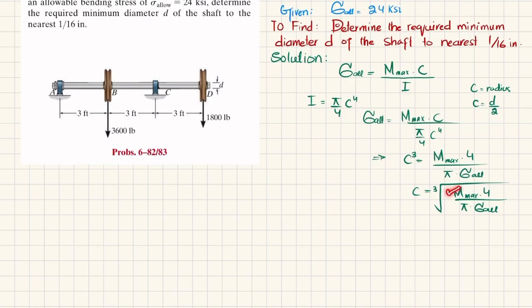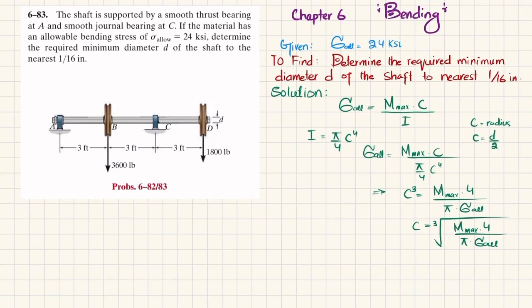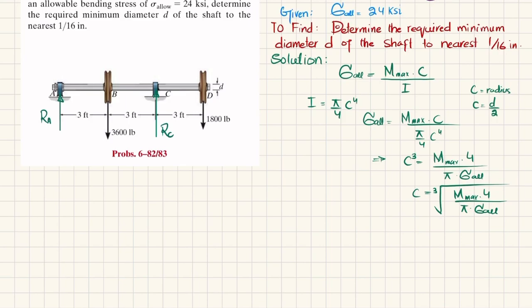To find c we need the maximum bending moment; the allowable stress is already given. We will find the maximum bending moment by using the shear force and bending moment diagram. For that, if we remove the smooth thrust bearing at A we get a reaction force R_A on the shaft, and if we remove the smooth journal bearing at C we get reaction force R_C. We find R_A and R_C using the equations of equilibrium.